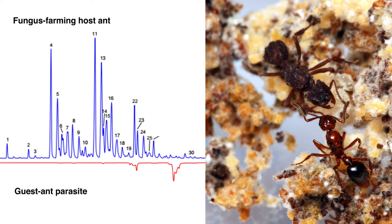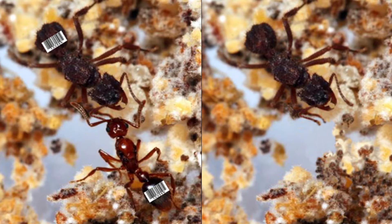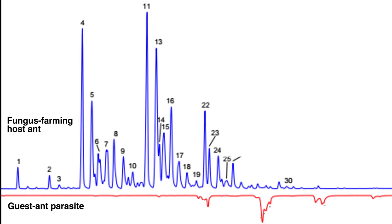Even though the parasite is physically present, the host cannot detect her. In both cases, the host ants accept the parasite into their fortress. Our results illustrate that the hydrocarbon profile of Megalomyrmex guestant parasites is minimal compared to their hosts.